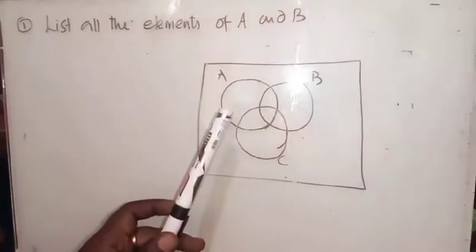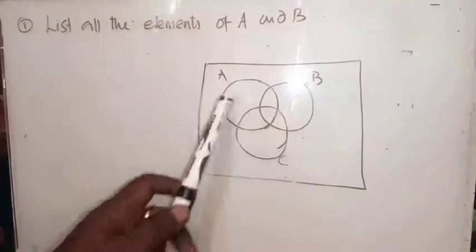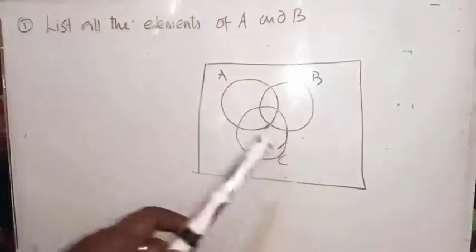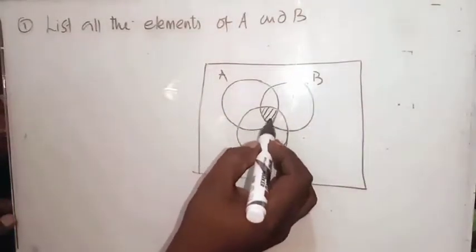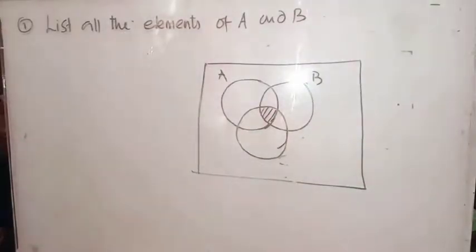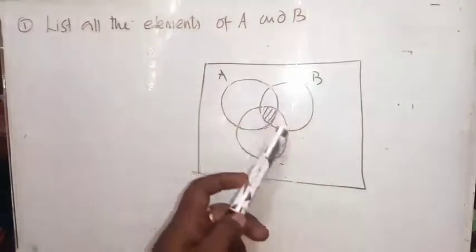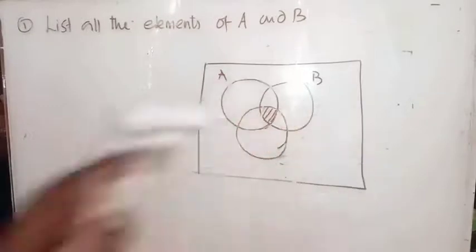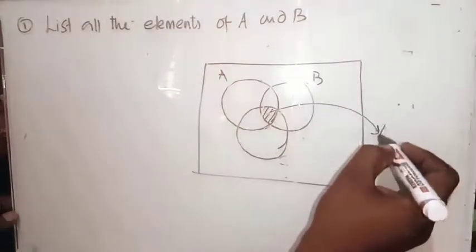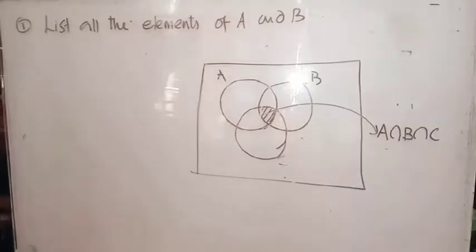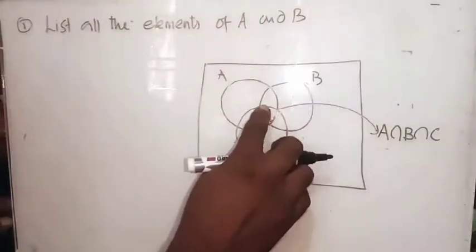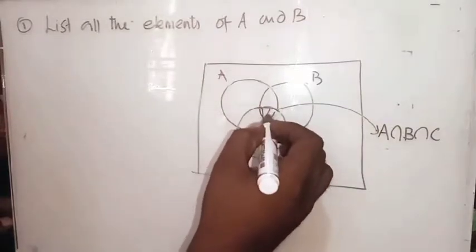Now check this diagram. You can find three overlapping sets — A, B, and C — making three joint sets. From this we can identify several parts. The portion common to all three sets is A intersection B intersection C.